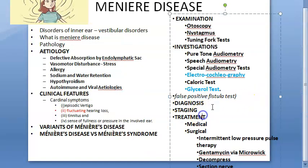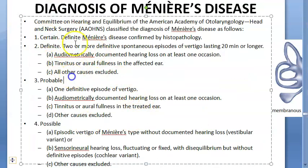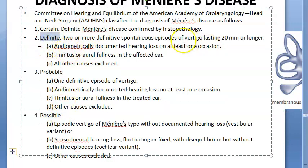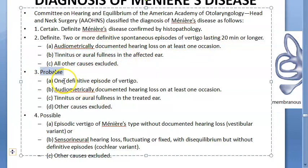To diagnose Meniere's disease, the Committee on Hearing and Equilibrium of the American Academy of Otolaryngology–Head and Neck Surgery classifies it as follows. For a certain diagnosis, histopathology is required. For a definite diagnosis, there must be two or more episodes of vertigo lasting 20 minutes or longer, documented hearing loss during at least one episode, and tinnitus or aural fullness. A probable diagnosis requires one episode of vertigo.